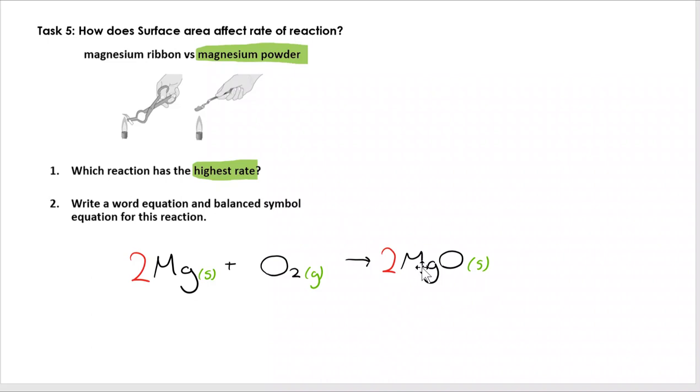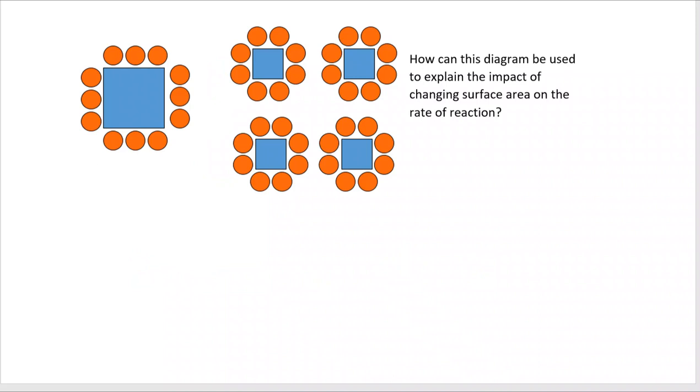It's the white ash that you see in the experiments where you will have observed or carried out the burning of magnesium. But let's move on and look at surface area in a little more detail. How can this diagram explain the impact of changing surface area on the rate of reaction? Have a think about it and when you're ready move on.